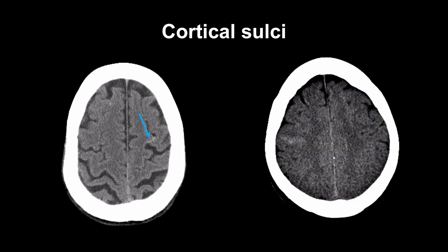The CT scan on your right is from another patient with a small subarachnoid hemorrhage. Notice that the asymmetric high attenuation in this case is less sharply defined compared with the case we just saw. The conspicuity of the hemorrhage is dependent on the quality of the CT, the technique used to create the CT images, and the slice thickness. Hemorrhage is usually more apparent on reconstructions of 1-2 mm.